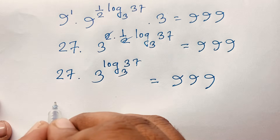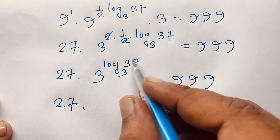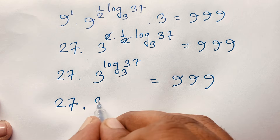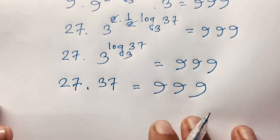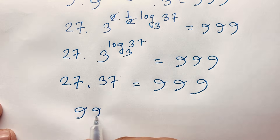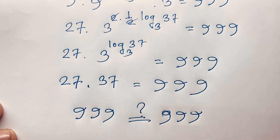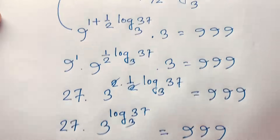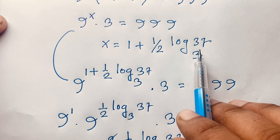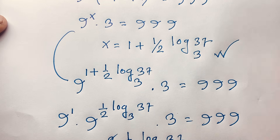You can see that 27 times 37 equals 999, so the left-hand side equals the right-hand side. Our final answer is confirmed: x equals 1 plus one-half times log base 3 of 37. This is the value of x in this exponential equation.